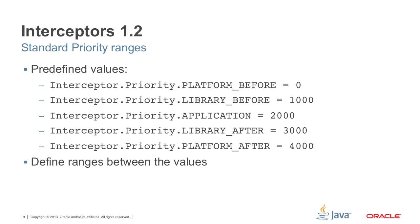We predefined priority ranges to be useful for developers and component providers. Platform providers will mostly use the range starting with PLATFORM_BEFORE, called early platform interceptors. The early platform range is PLATFORM_BEFORE up to LIBRARY_BEFORE. Then there is an early library range from LIBRARY_BEFORE to APPLICATION. From APPLICATION to LIBRARY_AFTER is the range intended for application interceptors. LIBRARY_AFTER to PLATFORM_AFTER will be the late library interceptors — those that need to execute later in the chain. PLATFORM_AFTER until the maximum integer are the late platform interceptors. These ranges are prescriptive, not required, but useful for ordering interceptors well.